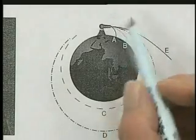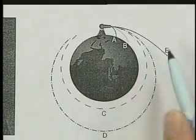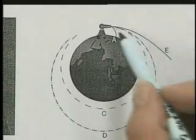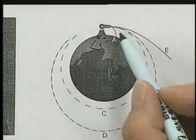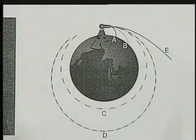If the cannonball had even higher velocity, instead of falling towards the Earth at the same rate of the curvature of the Earth, such that it was a circular orbit, it would actually rise above and end up in this elliptic orbit.